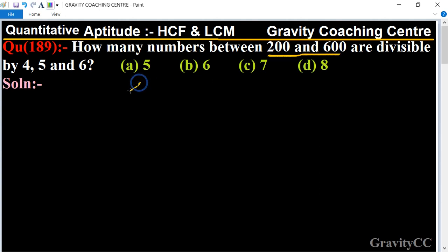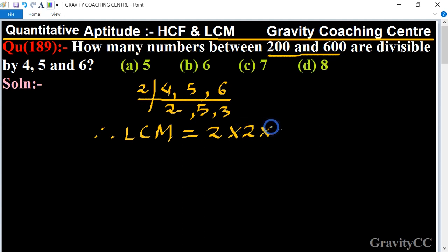5, 6. So it's the table of 2, 2, 2 - that is 4, 5, 3. Therefore, LCM equal to 2 multiplied by 2 multiplied by 5 into 3, equal to 60.